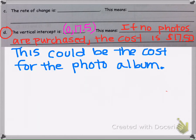So that's how we would explain what the vertical intercept represents. I would say this means if no photos are purchased, the cost is $17.50. This could be the cost for the photo album without the photos.